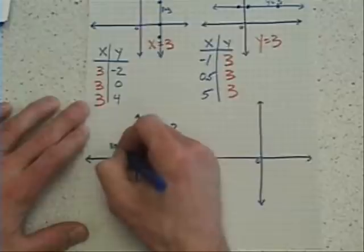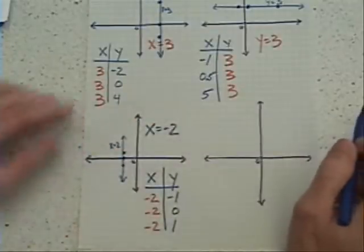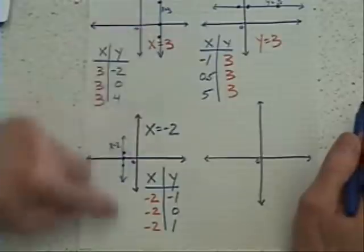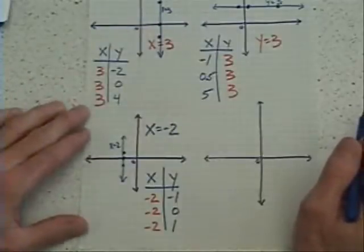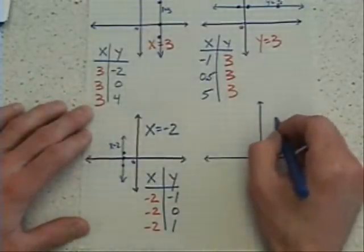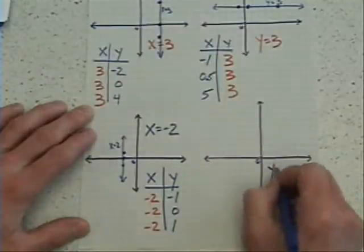And by the way, at this point, some of you might recognize there's a pattern. When you see x equals, it's going to be always vertical, and that's correct. When you see a y equals, for example, for our last example, maybe y equals 5.